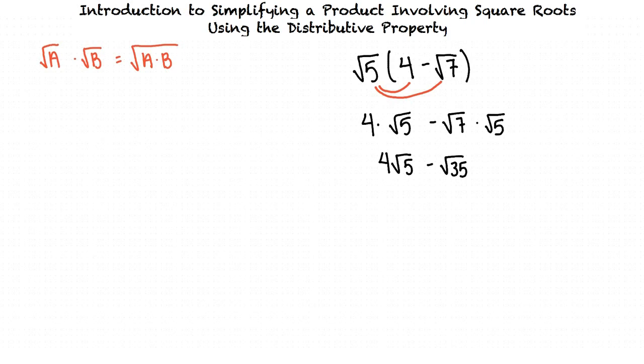Do you think we can simplify any of these square roots? Well, 5 has no perfect square factors other than 1, and 35 has no perfect square factors other than 1, so this is as simplified as we can get it. You're right. So our final answer is 4 square root of 5 minus the square root of 35.